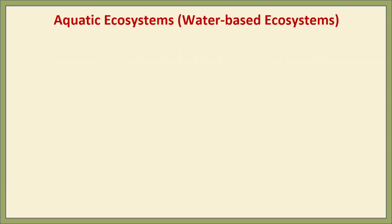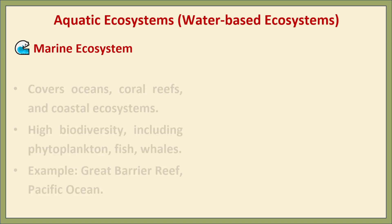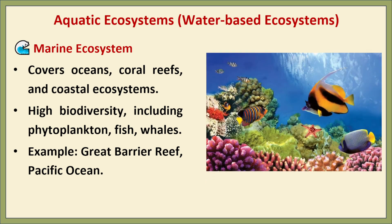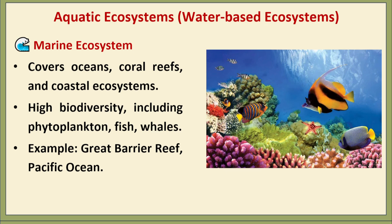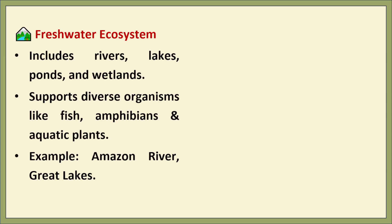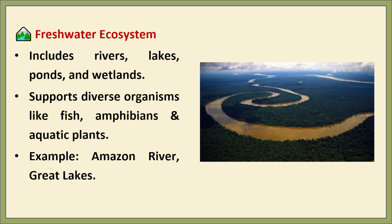Next is the aquatic ecosystem. The first type is the marine ecosystem, covering oceans, coral reefs, and coastal environments. It is home to an incredibly diverse range of organisms from tiny phytoplankton to large marine creatures such as fishes, whales, and sharks. Marine ecosystems play a vital role in regulating Earth's climate and producing oxygen. Famous examples include the Great Barrier Reef in Australia and the Pacific Ocean. The freshwater ecosystem includes rivers, lakes, ponds, and wetlands, supporting a wide variety of life including fish and aquatic plants. Freshwater bodies are essential for drinking water, irrigation, and maintaining biodiversity. Notable examples include the Amazon River in South America and the Great Lakes in North America.